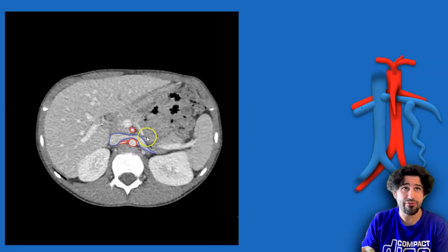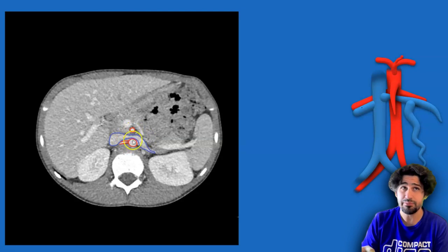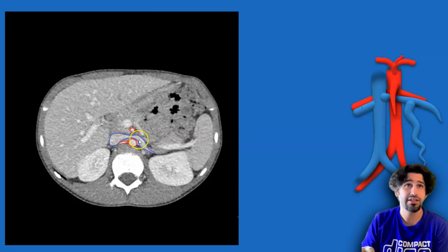Here's a normal left renal vein coursing between the aorta and SMA. You see the aorta here, SMA there, and you can see there's quite a distance between the two vessels and the left renal vein can course through there very cleanly without any compression.